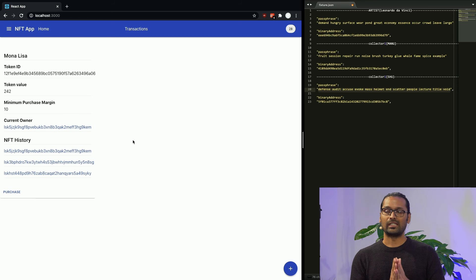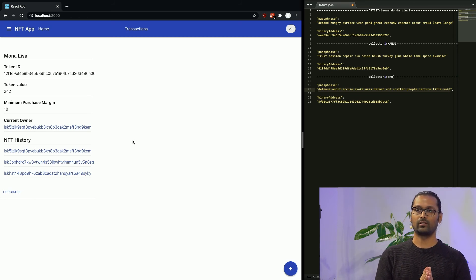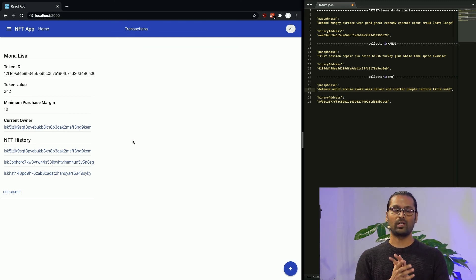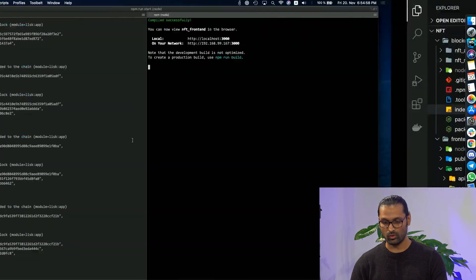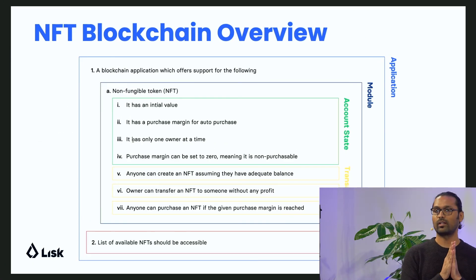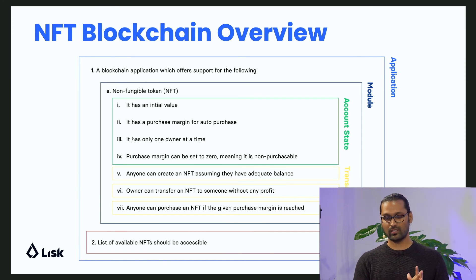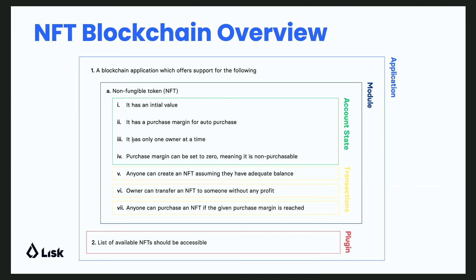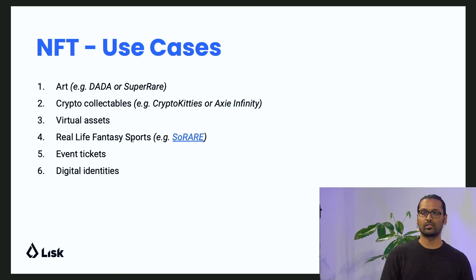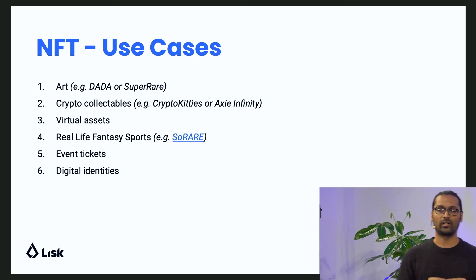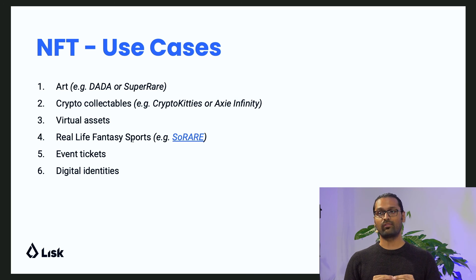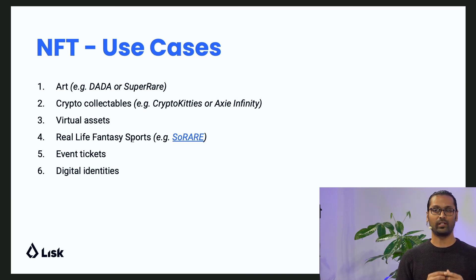This is how easy and simple it is to build any blockchain application — not only NFT — using our LISC SDK. I encourage you to try out our new LISC SDK coming in December. Let's see the overview of what we just built: a transaction that mutates the account state, encompassed by the module, while the plugin watches all transactions happening on the blockchain, captures the information, and provides metadata to the user interface. Some use cases you could try: a virtual asset, crypto kitty-style app collectibles, a real-life fantasy sport like Sorare, event tickets, or digital identities.